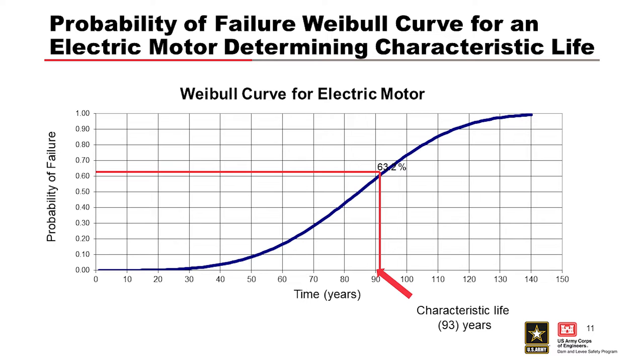Here you see a typical Weibull curve, which has been generated from data that was collected from dams throughout the core inventory. It's calculated using the Weibull formula and plotted. You can see where the characteristic life is determined, where the line meets 63.2%. And at that point, it will be 93 years old. And this particular curve is for an electric motor.